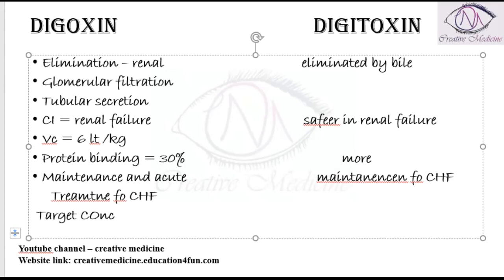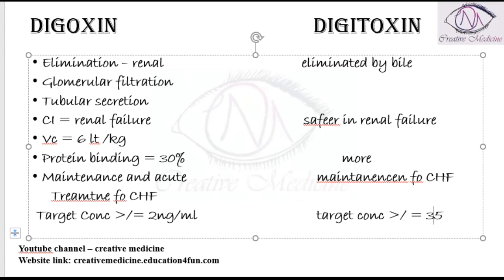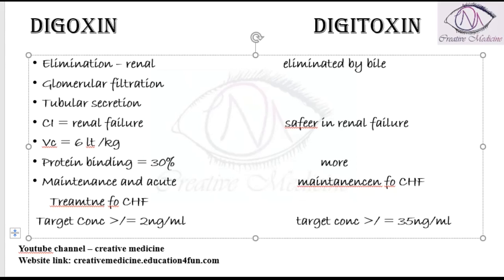The target concentration for digoxin should be more than or equal to 2 nanograms per ml. The target concentration of digitoxin should be more than or equal to 35 nanograms per ml.